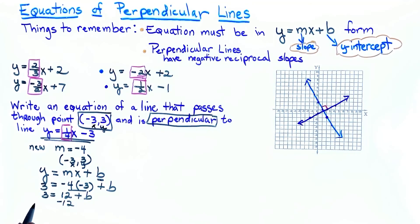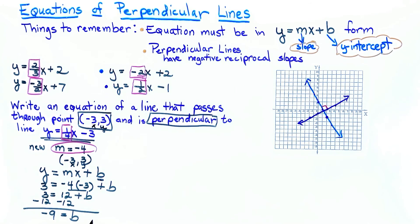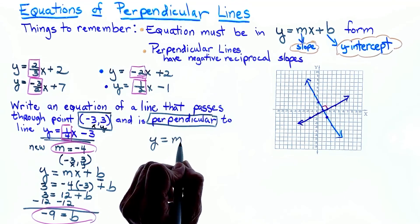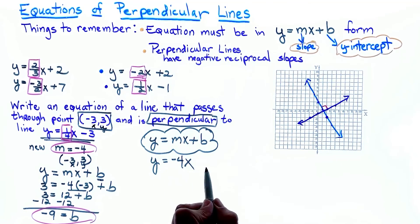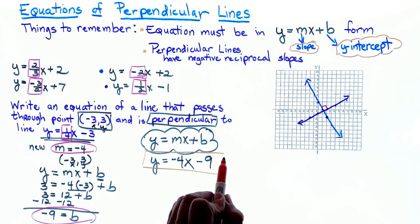My y-intercept b is negative 9. Writing y equals mx plus b: my new slope is negative 4, and since b is negative 9, I write minus 9. So the equation of the line perpendicular to the given one is y equals negative 4x minus 9.